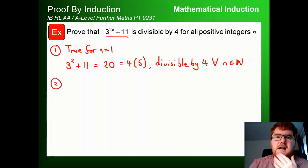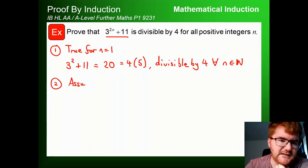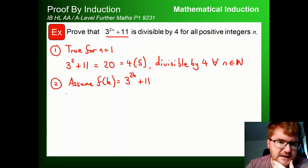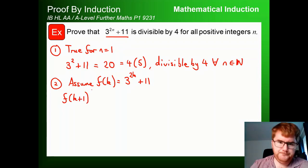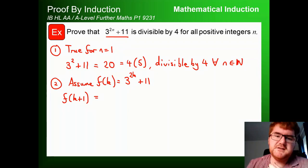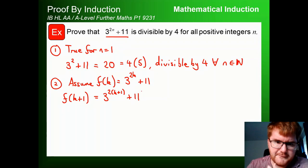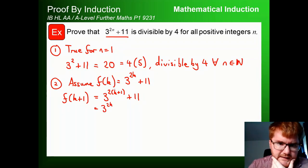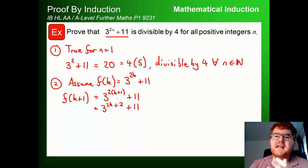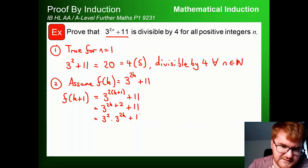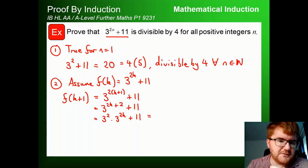For n=1: 3^(2×1)+11 = 3²+11 = 9+11 = 20 = 4×5. So it is divisible by 4. Therefore true for n=1. Now for step 2. We define f(k) = 3^(2k)+11 and assume that's true. We then substitute k+1 to find f(k+1) = 3^(2(k+1))+11 = 3^(2k+2)+11.